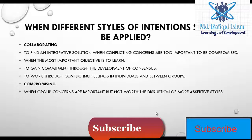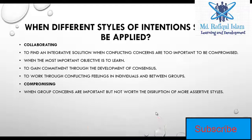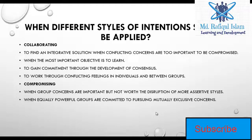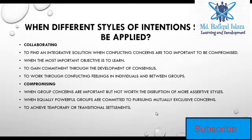The next one is the compromising style. Compromising is effective when group concerns are important but not worth the disruption of a more assertive style, and when equally powerful groups are committed to pursuing mutually exclusive concerns.